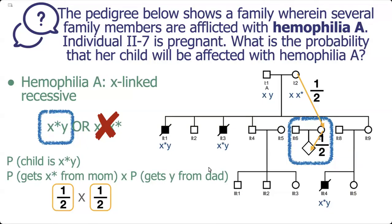Now for the dad's side, we incorporate the Y into our equation. The chance that dad passes on a Y to his offspring is one out of two, because dad has an X or a Y and one will be passed on. We multiply that in as well because all of these events have to happen. Our final answer to this question is 1 over 8.